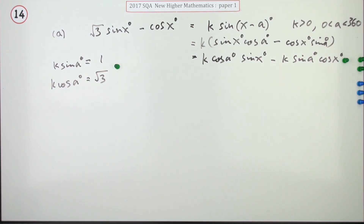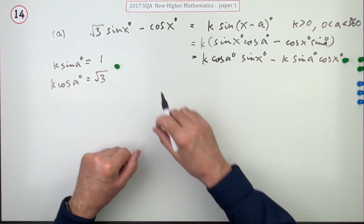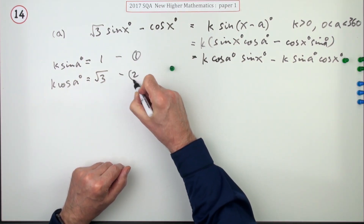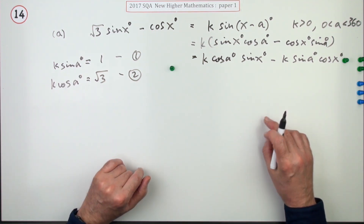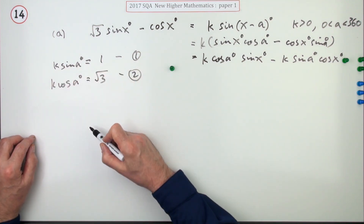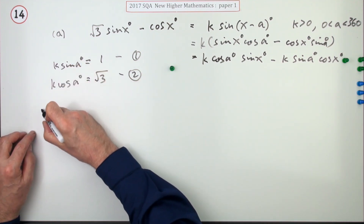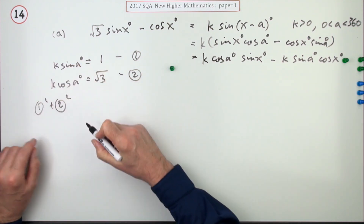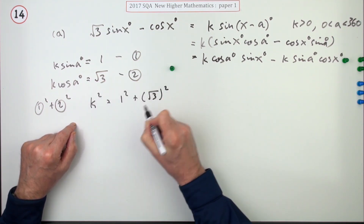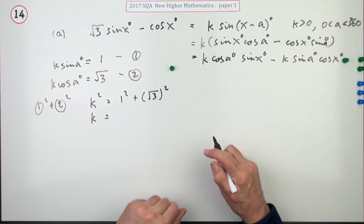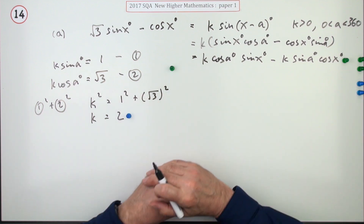These equations have to be stated — you can't just jump to k² = ... without stating them first, even though you may get the answer. Strictly speaking what you have are a pair of simultaneous equations. To find k, square and add: sine squared plus cos squared equals 1, so k² = 1² + (√3)², giving k² = 1 + 3 = 4, and the square root is 2. It has to be positive because k > 0. Getting k = 2 earns the mark.